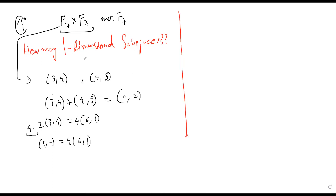So now the question is: how many one-dimensional subspaces will there be? Anybody wants to say? I wanted to show that there are a lot of combinatorics questions which can actually be written in the language of vector spaces, and then the theory of vector spaces can be used to count them. This is another very interesting branch — it's all very connected. Combinatorics is my favorite area.